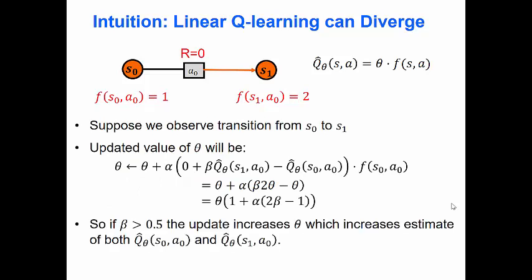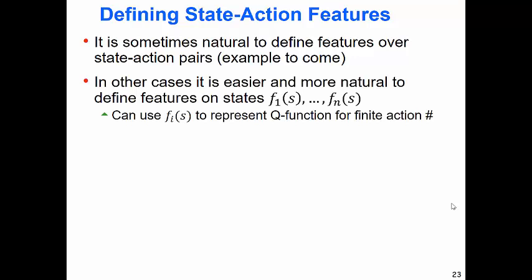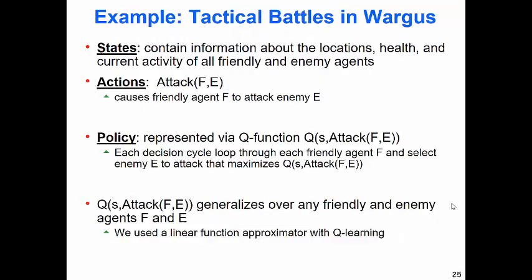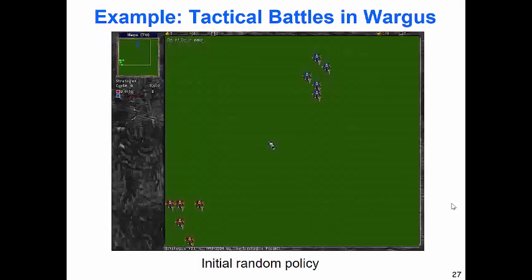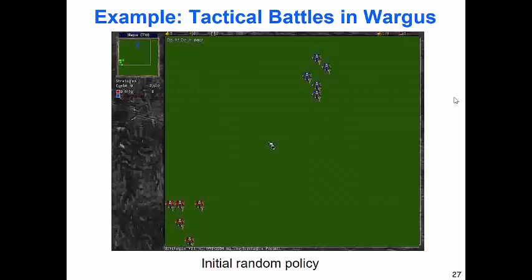There weren't great theoretical guarantees for these function approximation methods for value functions, even in the linear case. We went through some examples of how Q-Learning can diverge, and SARSA — the guarantees are pretty weak. We saw this example of Q-Learning with these battles. This showed how you might define features for a particular problem, and pretty simple linear function approximation works well on this problem.